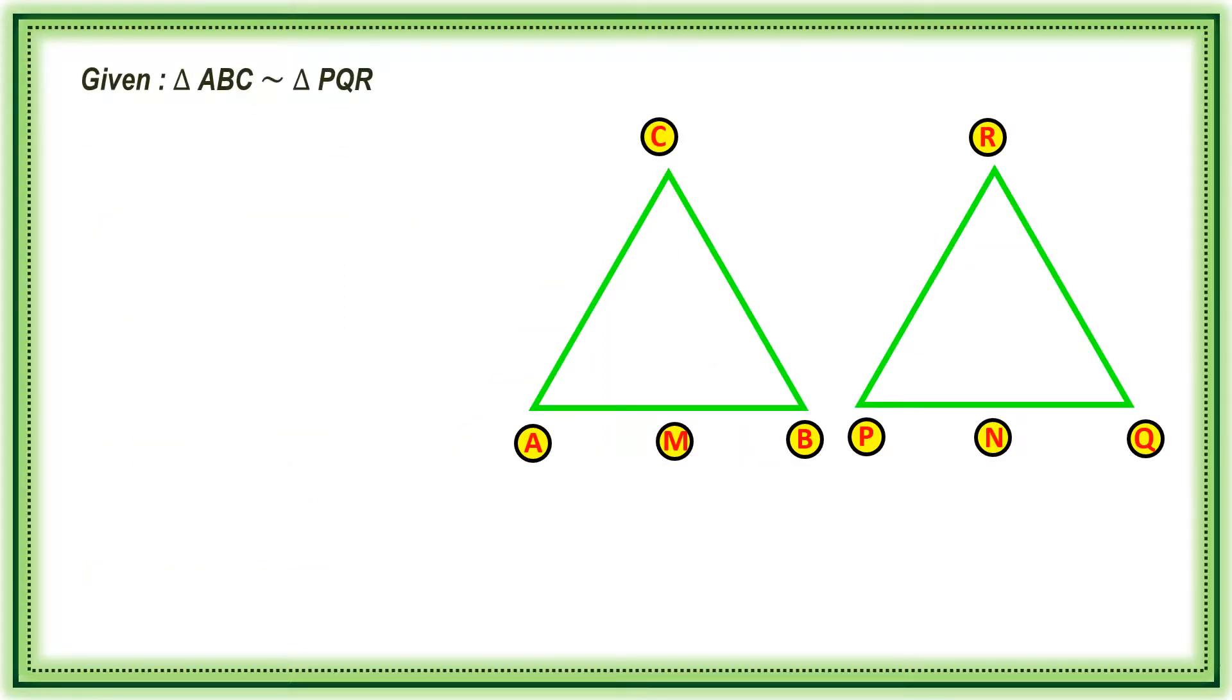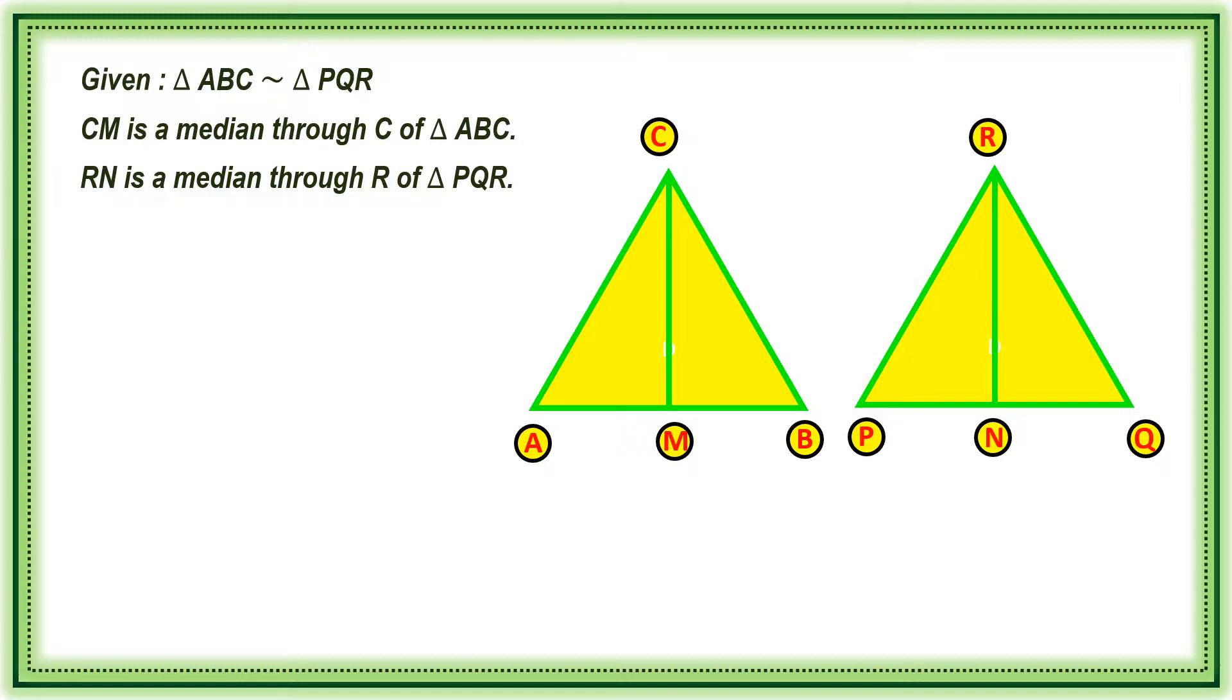Given triangle ABC similar to triangle PQR. CM is a median through C of triangle ABC. Similarly, RN is a median through R of triangle PQR.